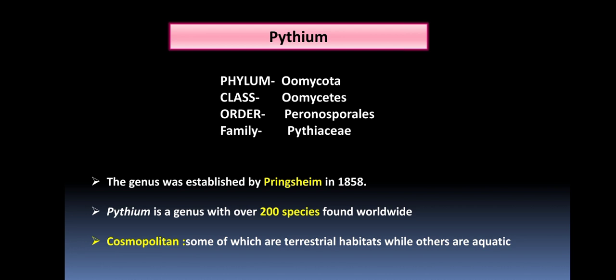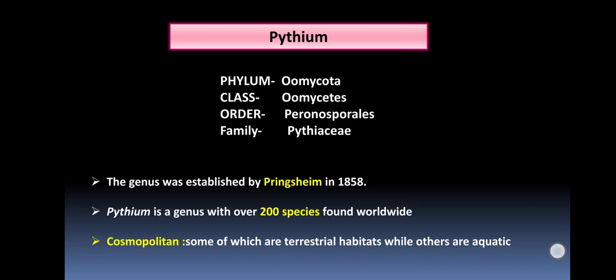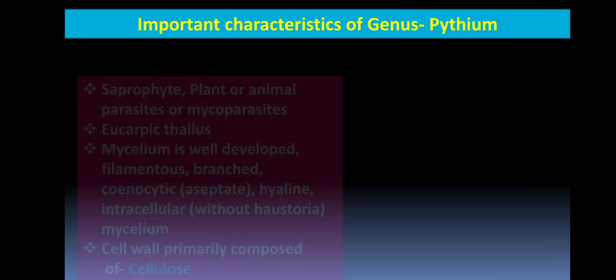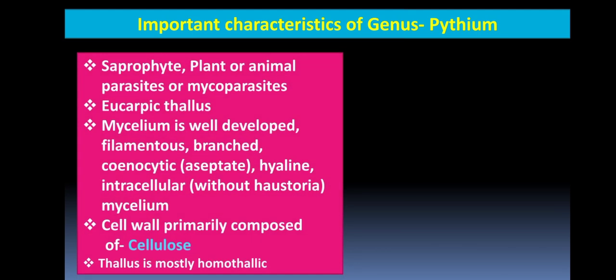The genus Pythium is found with more than 200 species all over the world. It is cosmopolitan in nature, meaning it is found in a wide range of habitats. Now let's discuss the important characteristics of the genus Pythium.